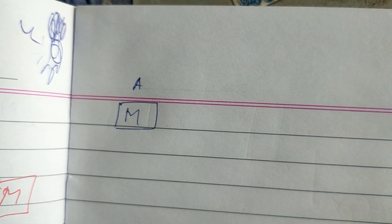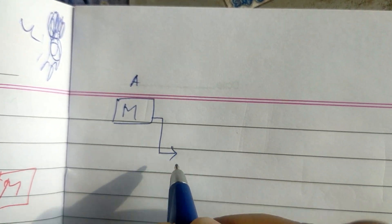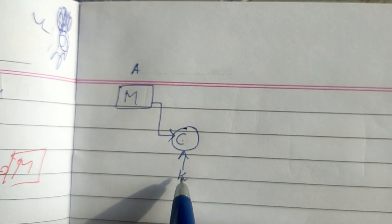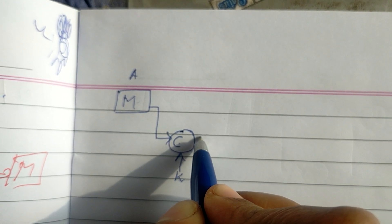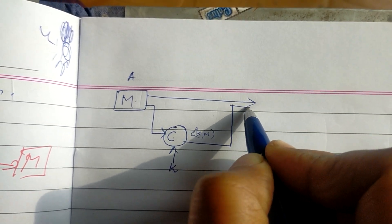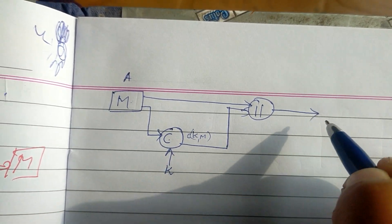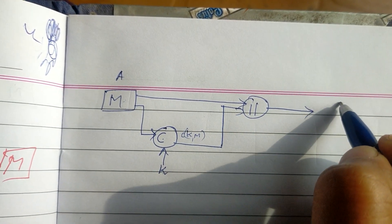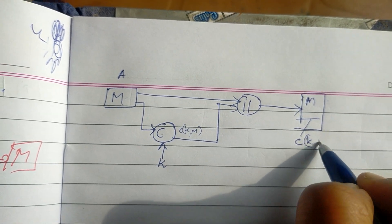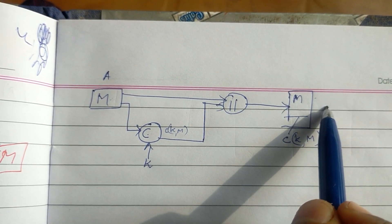We do not have confidentiality in this message. So, what is the message? M. The message is the source. MAC is a function of key and message. We append this MAC to the message — message plus MAC.